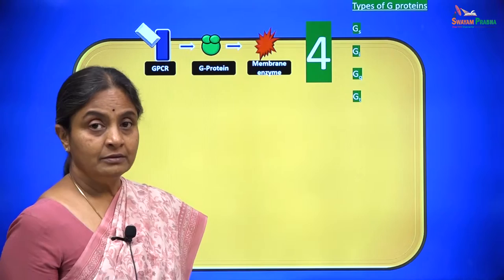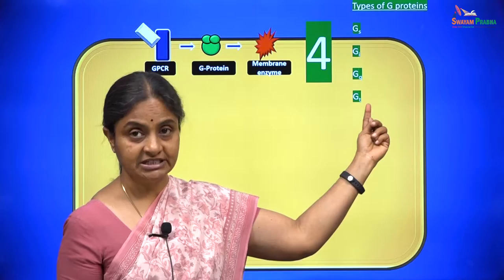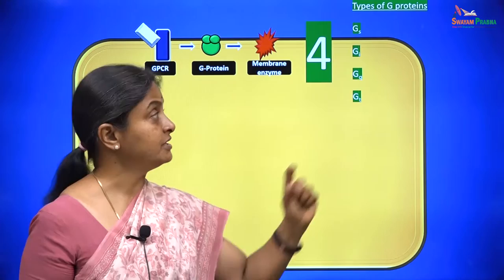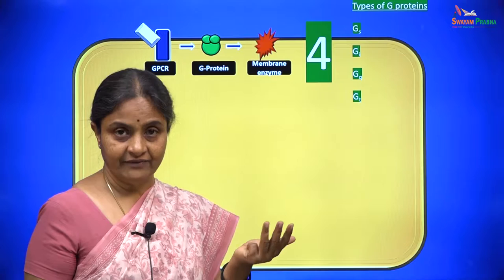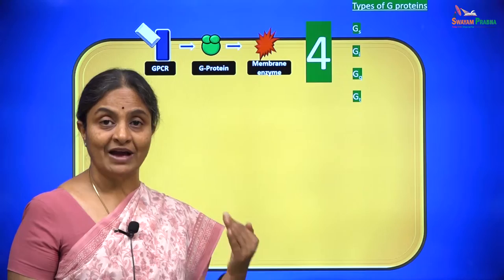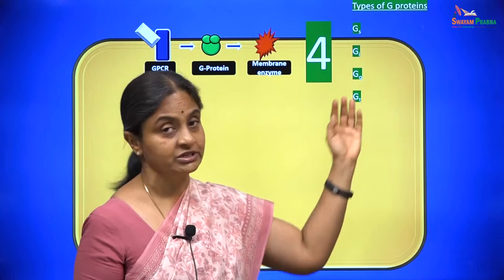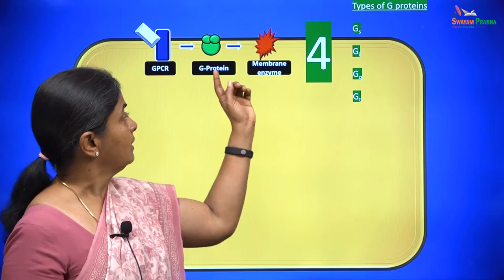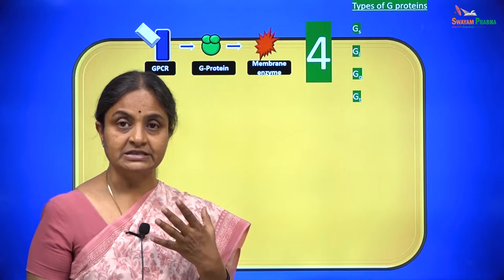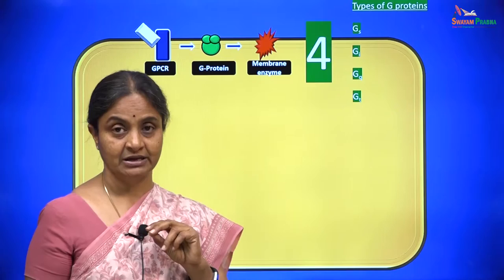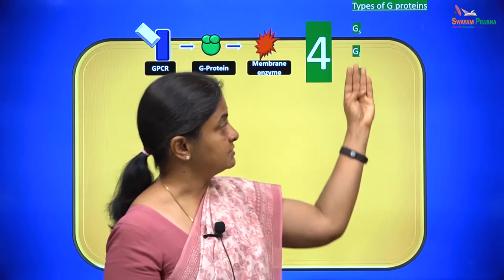We will now see four types of G-proteins: Gs, Gi, Gq, and Gt. Gs stands for G-stimulatory, Gi for G-inhibitory, and then Gq and Gt. There are others like G-11, G-12, G-13, but their patterns of activity resemble one of these four subclasses. A G-protein is so called because it binds GTP — it is a GTP-binding protein and a GTPase enzyme in itself.